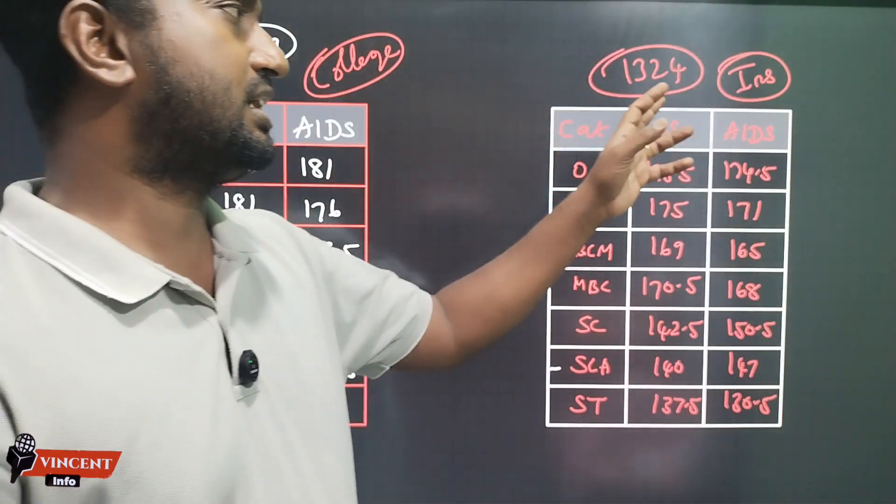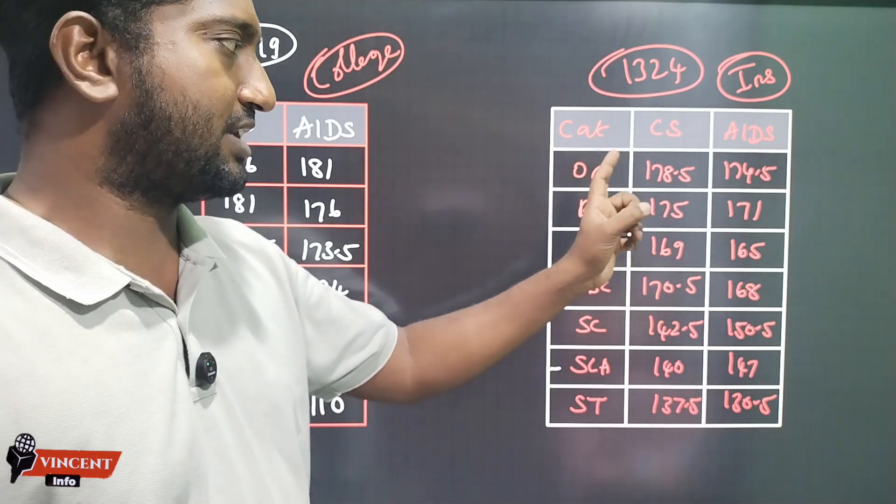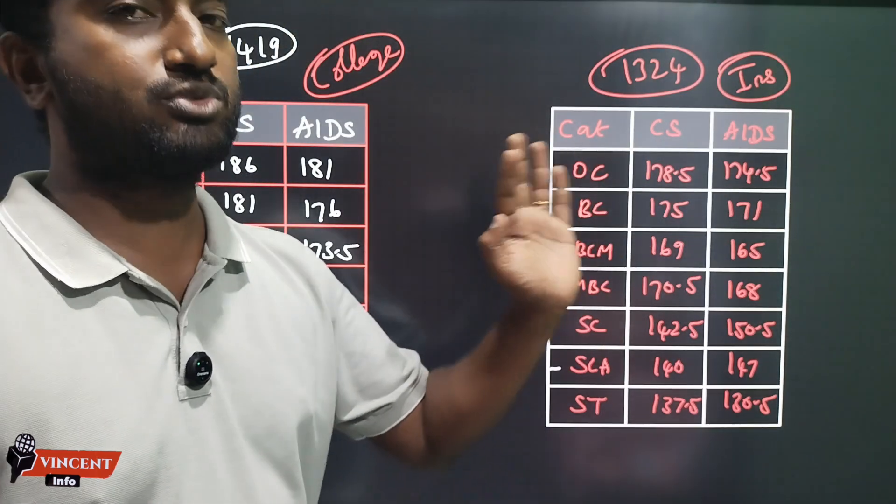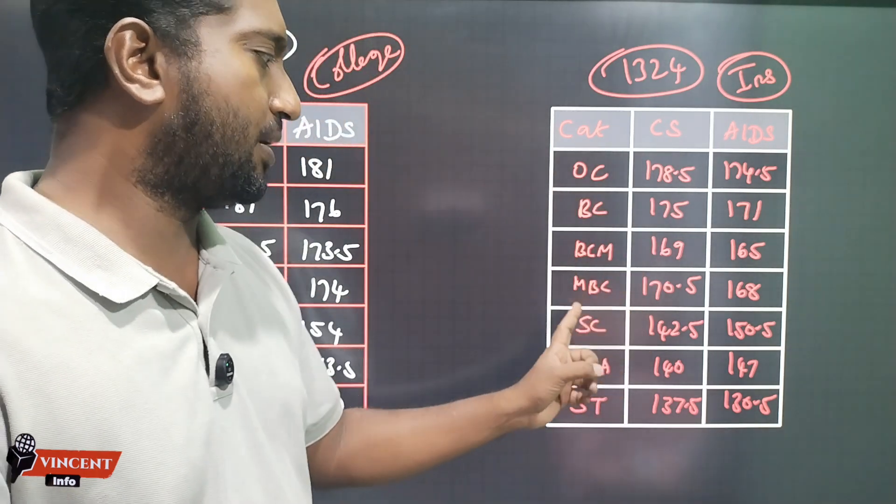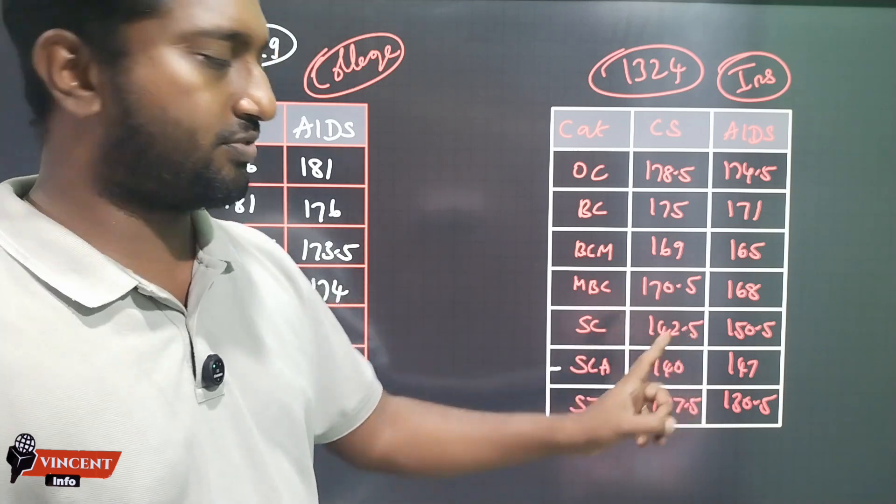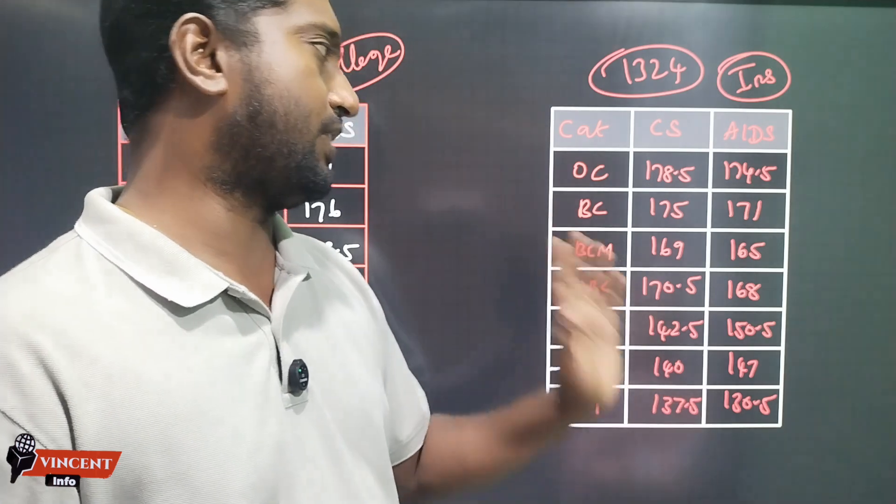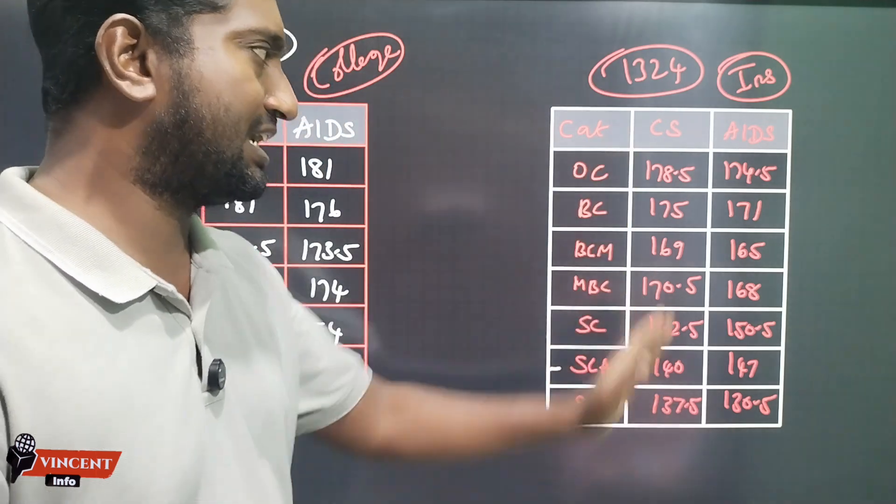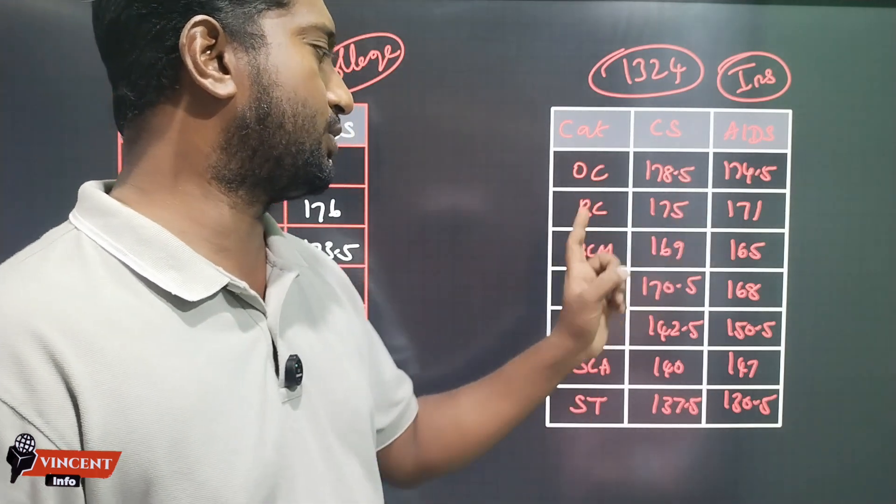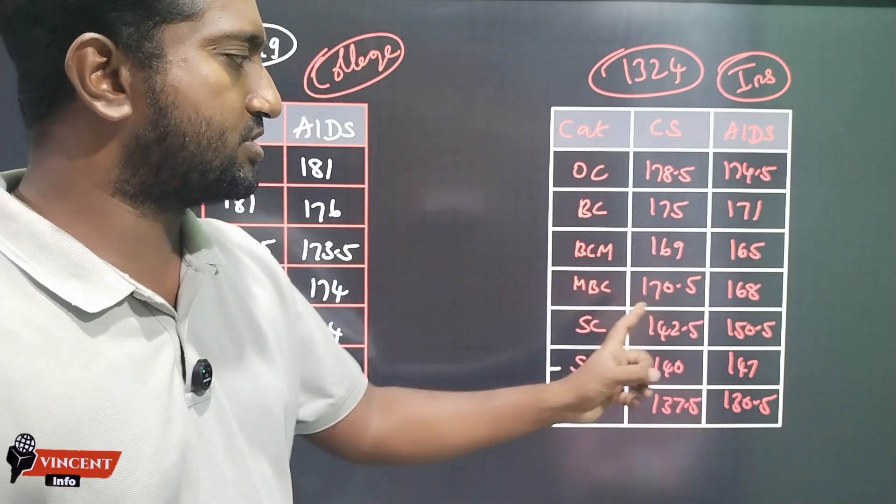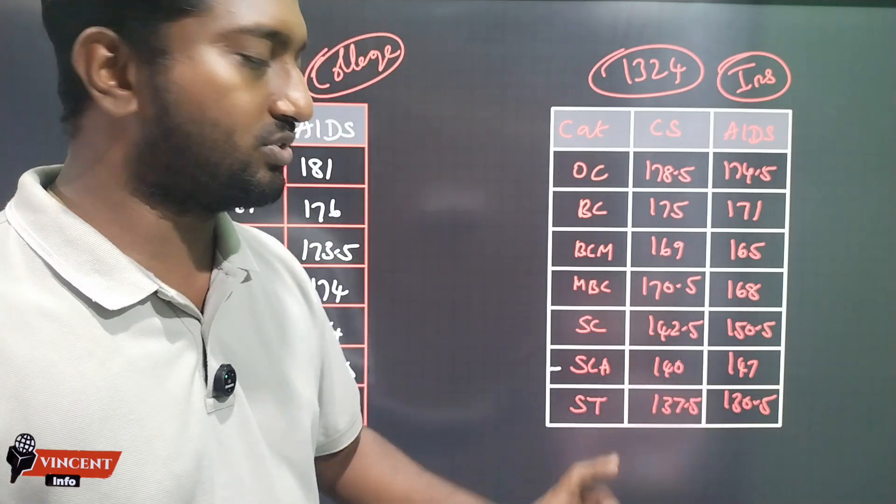The Institute second round: OC category is 178.5, BC is 175, BCM is 169, MBC is 170.5, SC is 142.5, SCA is 137.5. For AI&DS: 174.5, BC is 171, BCM is 165, MBC is 168, SC is 150.5, SCA is 147, ST is 130.5.